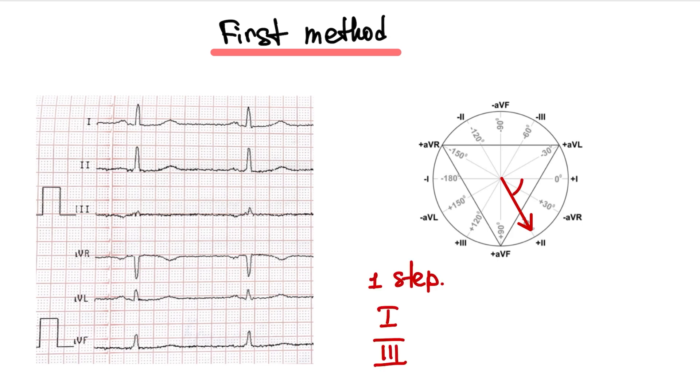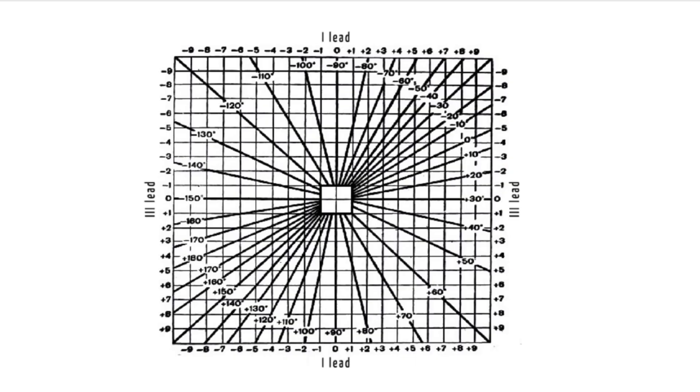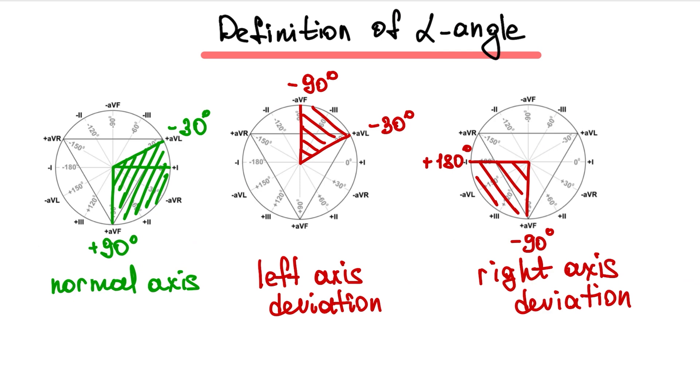The first step is to calculate the summary of QRS waves at lead 1 and at lead 3. For example, on this ECG, the summary of QRS waves at lead 1 is plus 7. At lead 3 it is plus 3. Next step, we look at this table and find this meaning. Lead 1 plus 7 and lead 3 plus 3. Alpha angle is plus 45. It's the normal cardiac axis. And at this slide you can see the definition of alpha angle for different types of axes.